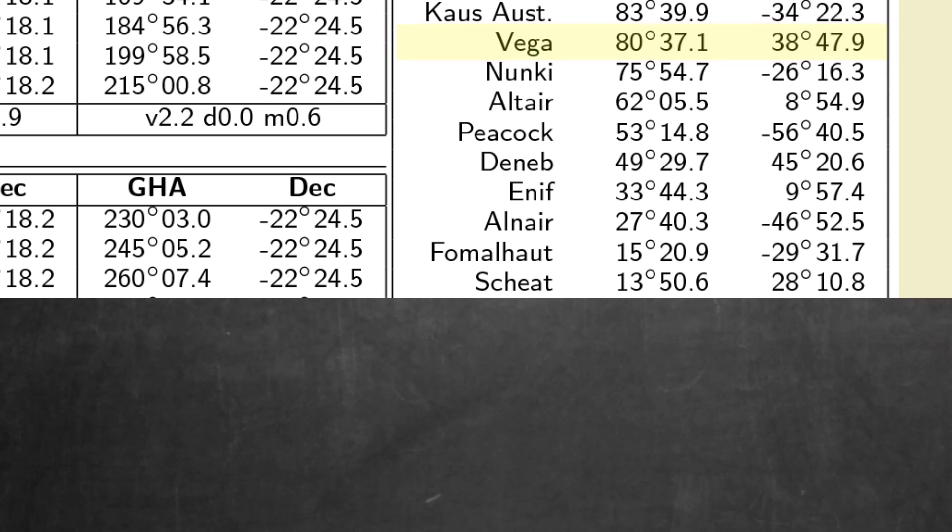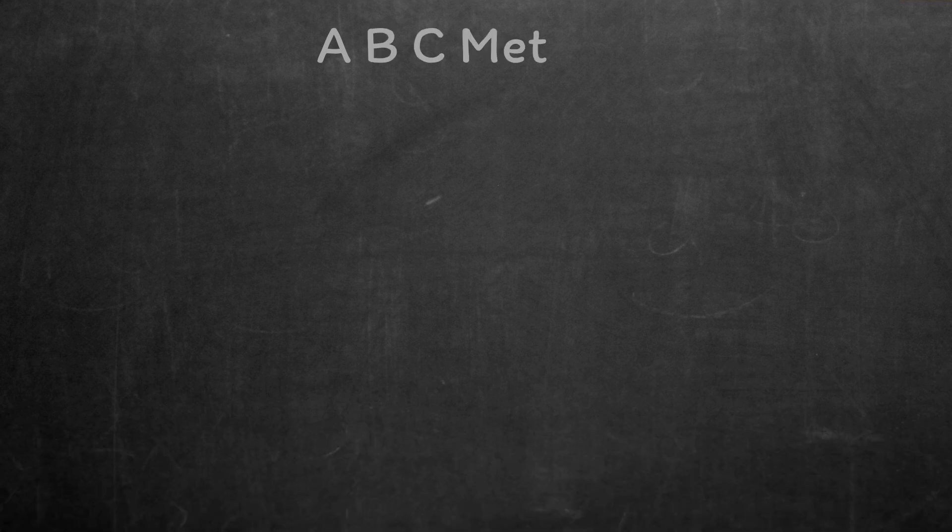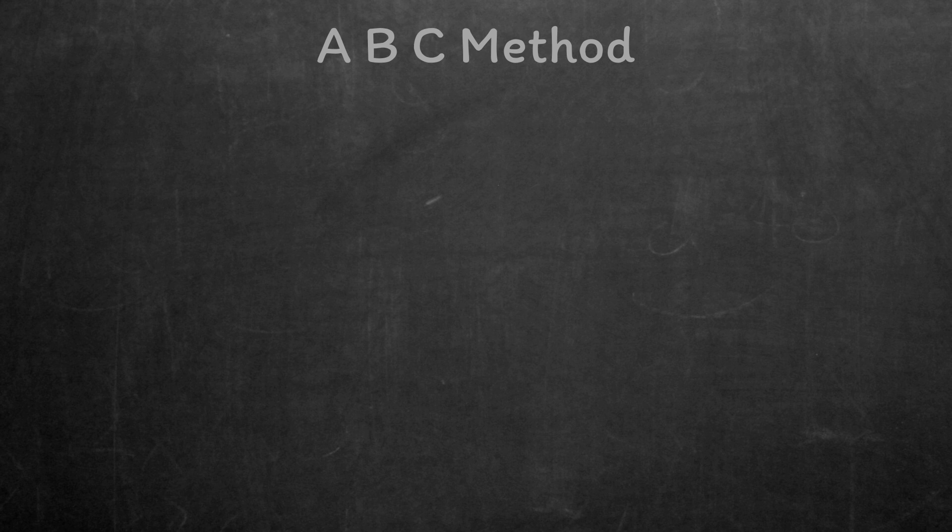And now we come to the calculations. I use the ABC method, which matches publications like Nori's tables, which you could use if you didn't have a calculator. I just use a calculator to give me the values instead of looking them all up in the tables themselves.